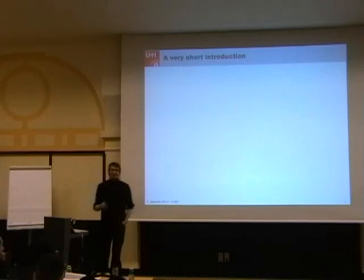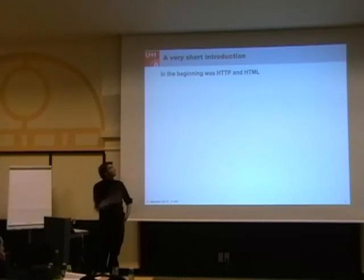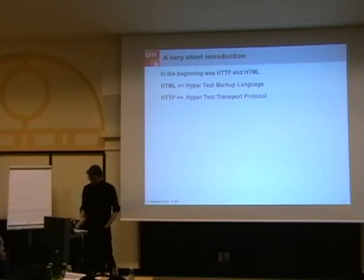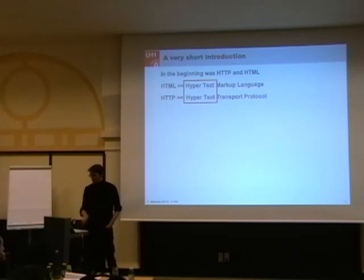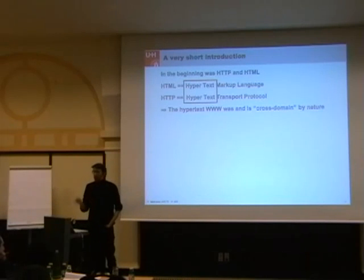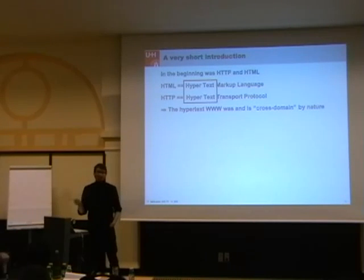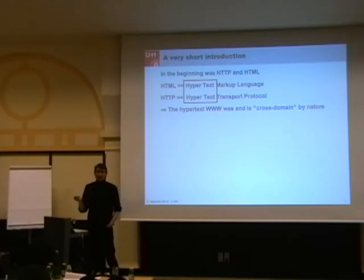A very short introduction to the WWW. In the very beginning, the WWW was one protocol and one specification for documents: HTTP and HTML. HTTP is hypertext transport protocol and HTML is hypertext markup language. The interesting word here is 'hypertext.' If you look at the beginning of the WWW, you will notice that what we call today the internet or the WWW was cross-domain by nature, because the linking between documents hosted by different people and the intermixing of content from different people was a very essential design goal of the WWW.